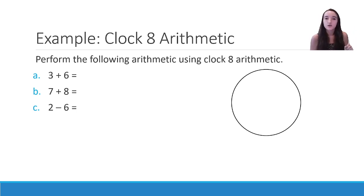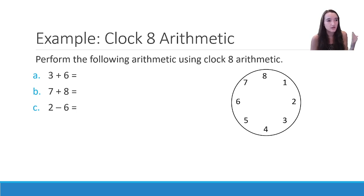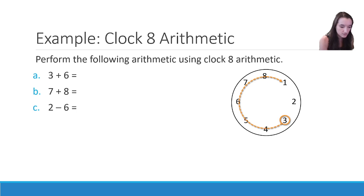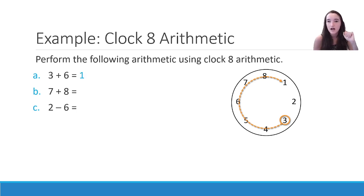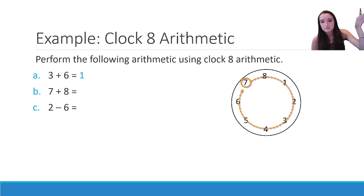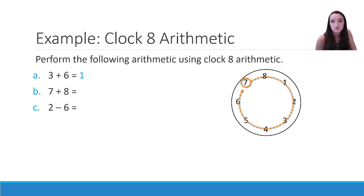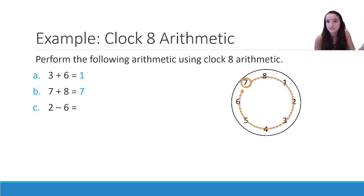Here I want to perform arithmetic using Clock 8 — a clock with the numbers 1 through 8. When I do 3 plus 6, I start at 3 and go around 6 spaces, landing on 1. So 3 plus 6 is 1 in Clock 8 arithmetic. For 7 plus 8, I start at 7 and go around 8 — I return to 7, because 8 brings us all the way around the entire clock. So 7 plus 8 is 7.